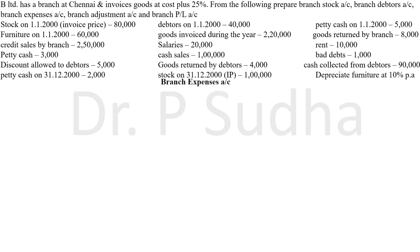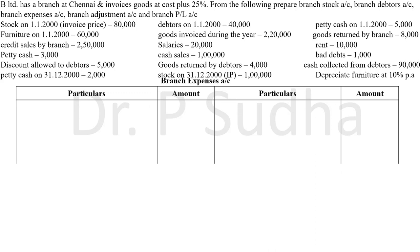The next account we will prepare is branch expenses account. Branch expenses is a nominal account — we debit all expenses and losses. From the question, we have salaries 20,000 and rent 10,000, both recorded on the debit side. For petty cash, we have an opening balance, a closing balance, and cash sent during the year, so we need to prepare a separate petty cash account to find out how much the petty expenses are.